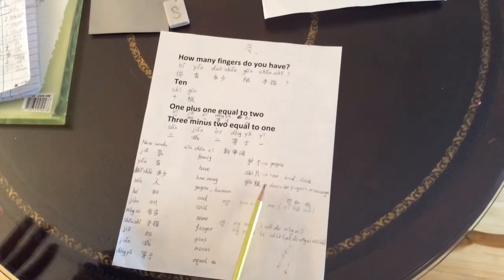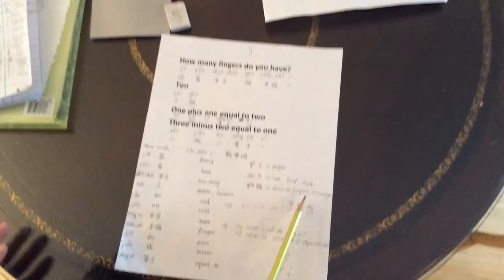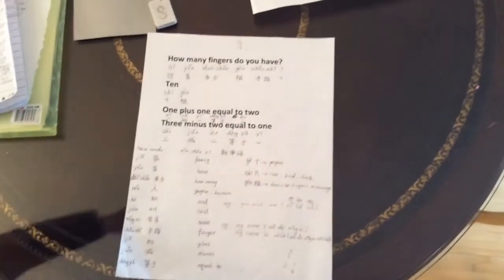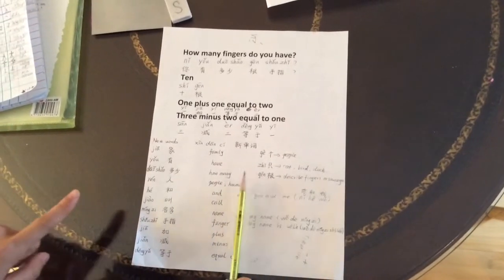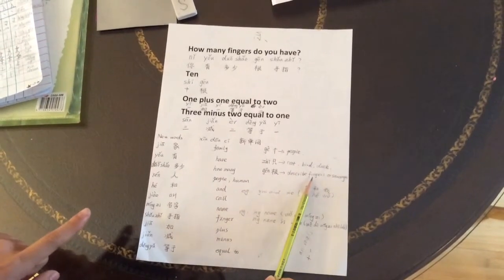根 is used to describe fingers or sausage, long things. One finger, 一根手指.